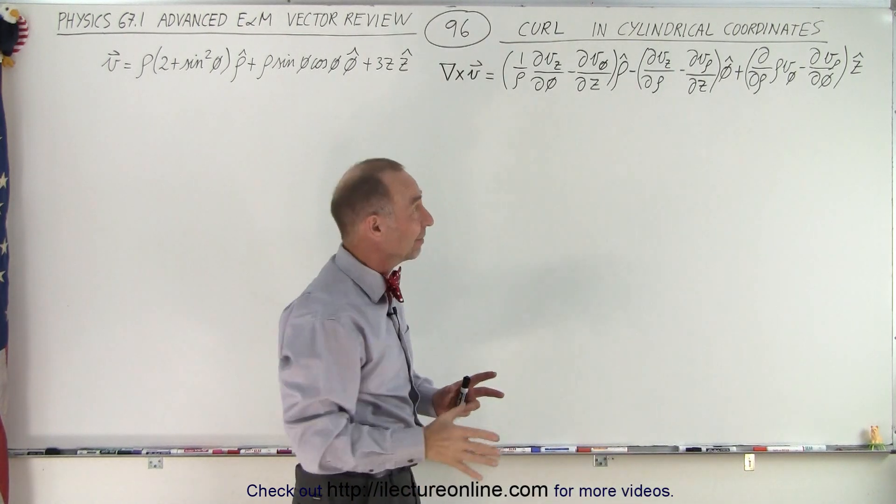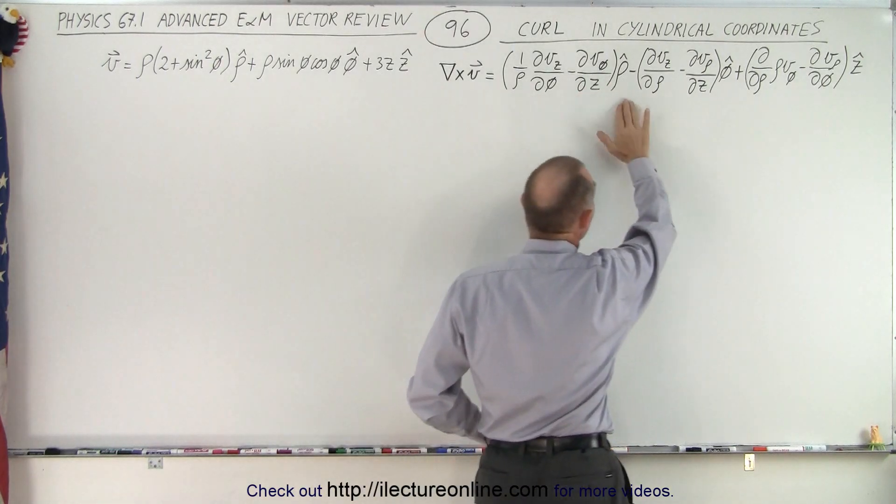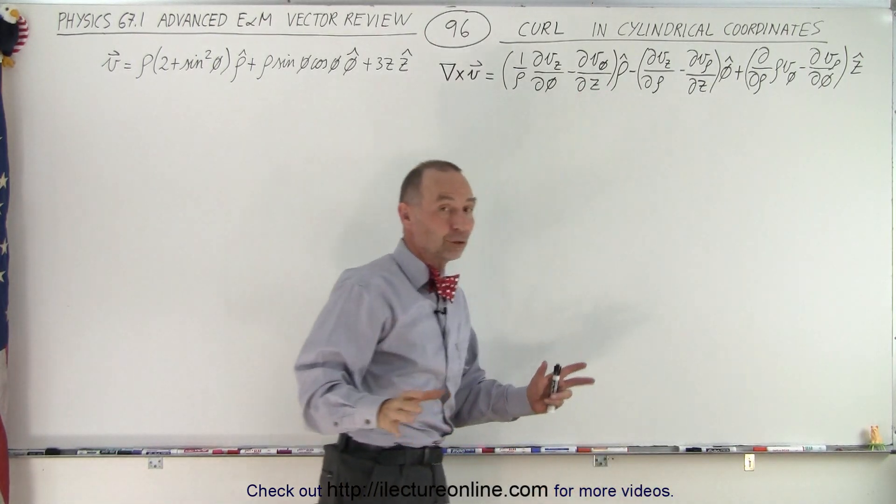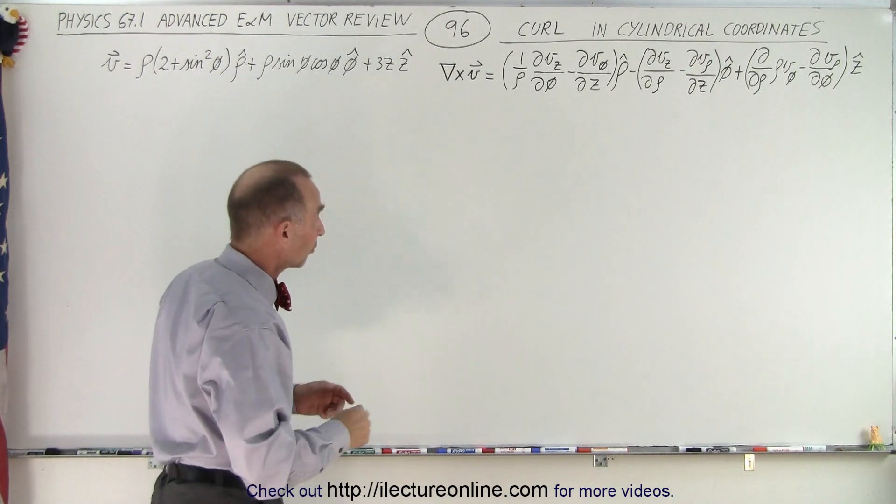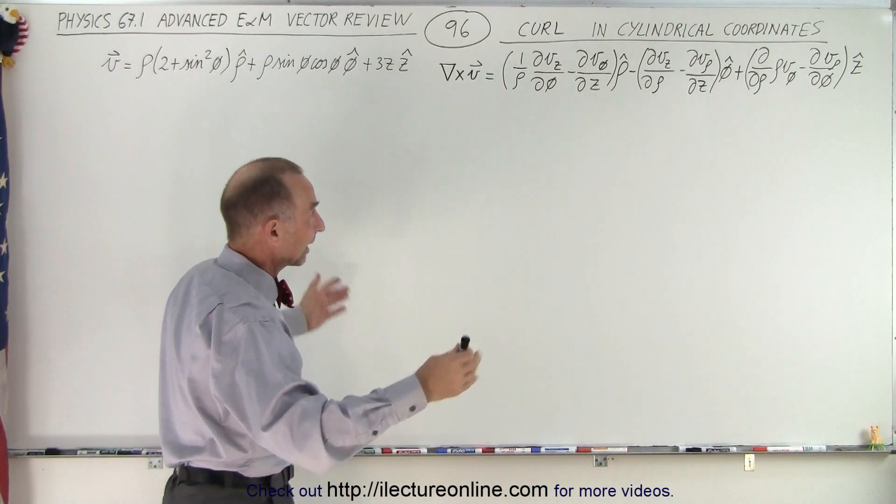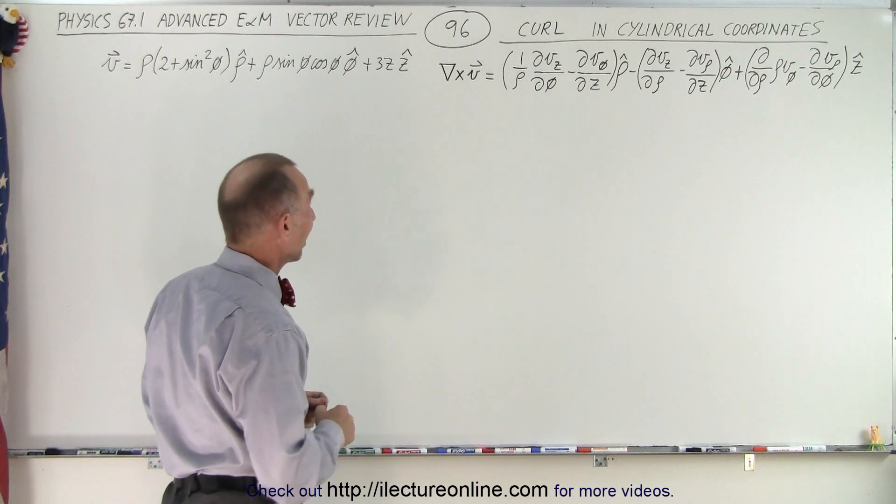I like to keep it as a negative because normally when we take the curl, we have positive, negative, positive for the three terms in the curl, the results of the curl. So I just kind of like to keep it that way, even though books tend to reverse that.